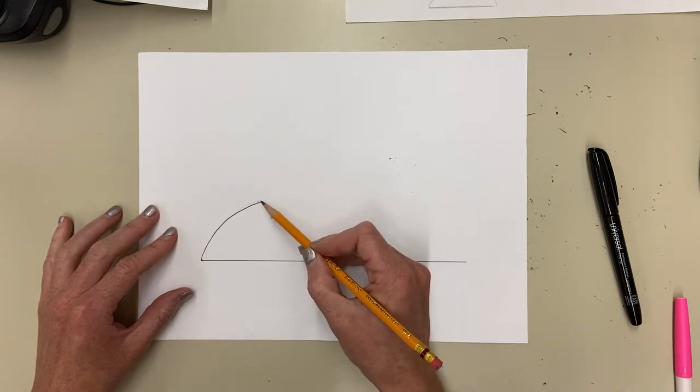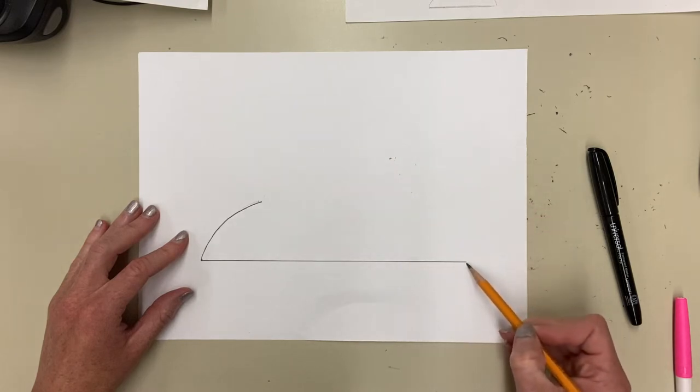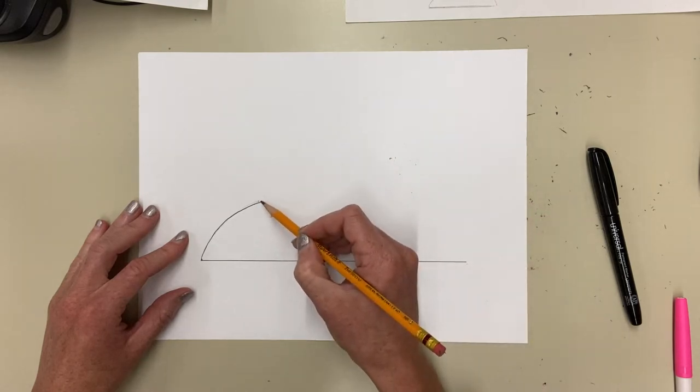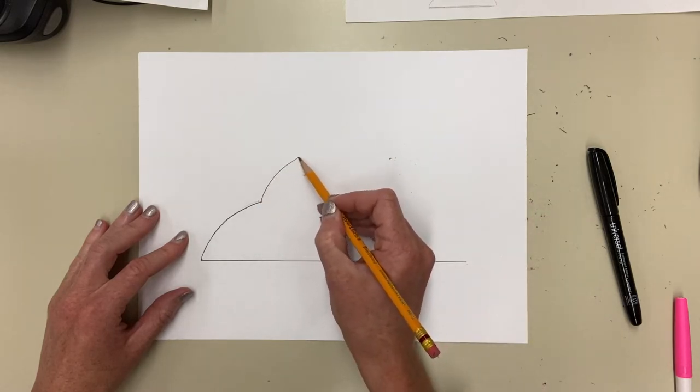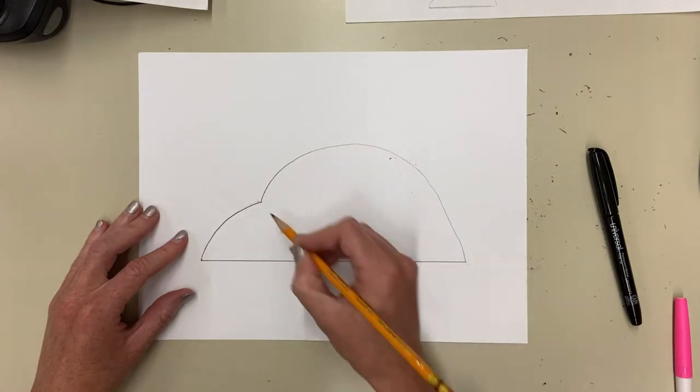The next thing I'm going to do is I'm going to touch the end of this line and now I'm going to make a big arch that goes all the way over to this side. It's going to kind of make the car look like an igloo. It's going to go up, over, and down. There we go.